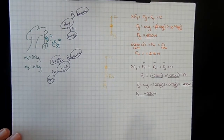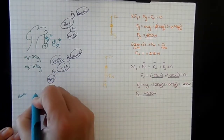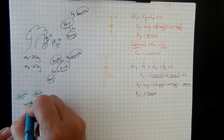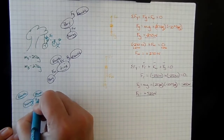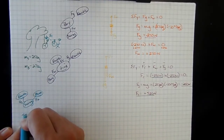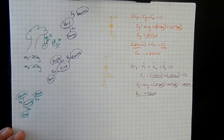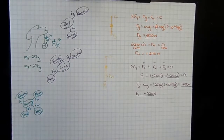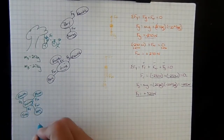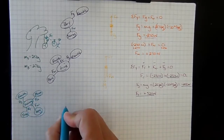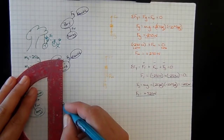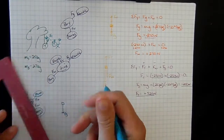What forces do we have? We've got Earth and we have mom. We're looking at the swing. So we've got mom with an applied force, we've got gravity, and then we have the string with a tension force. We also have the boy's weight. Since the swing is what we're analyzing, we can put the swing and the boy into one big system — it's a little simpler that way.